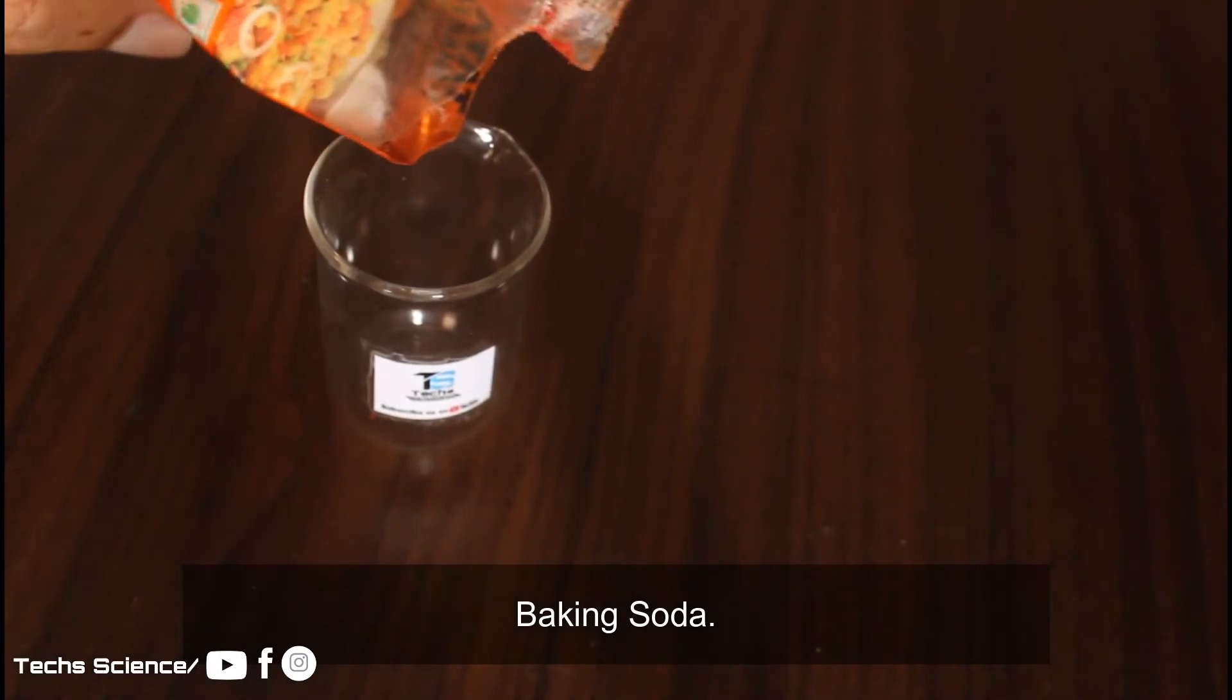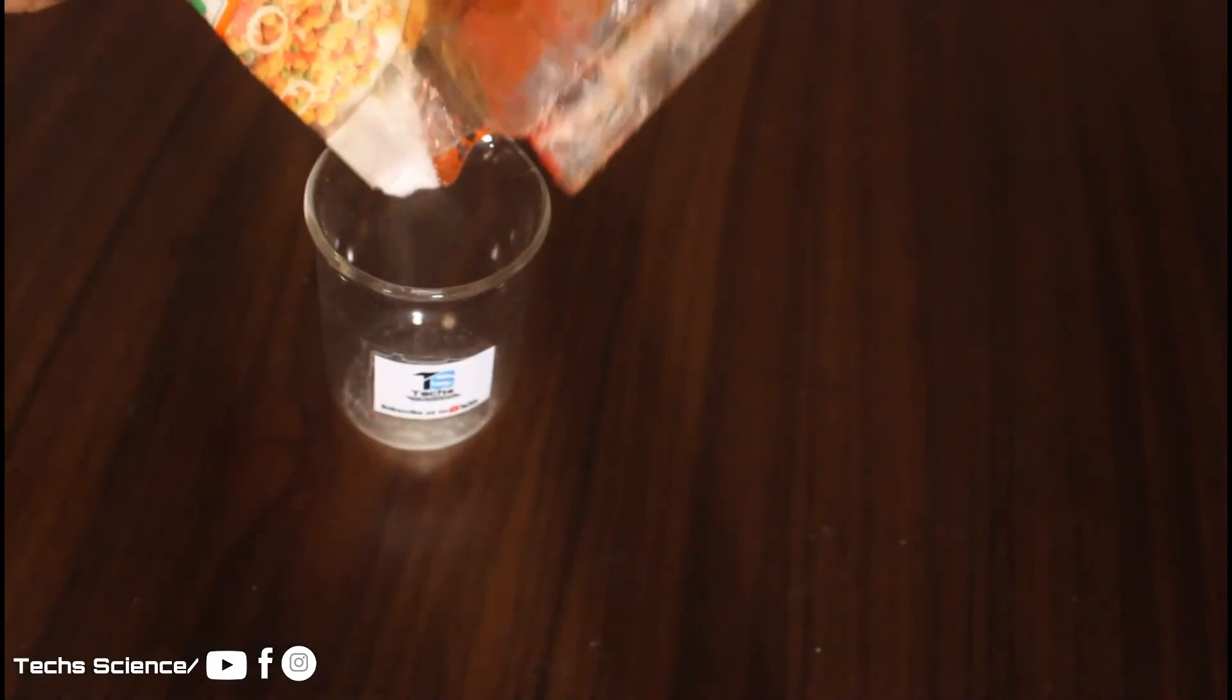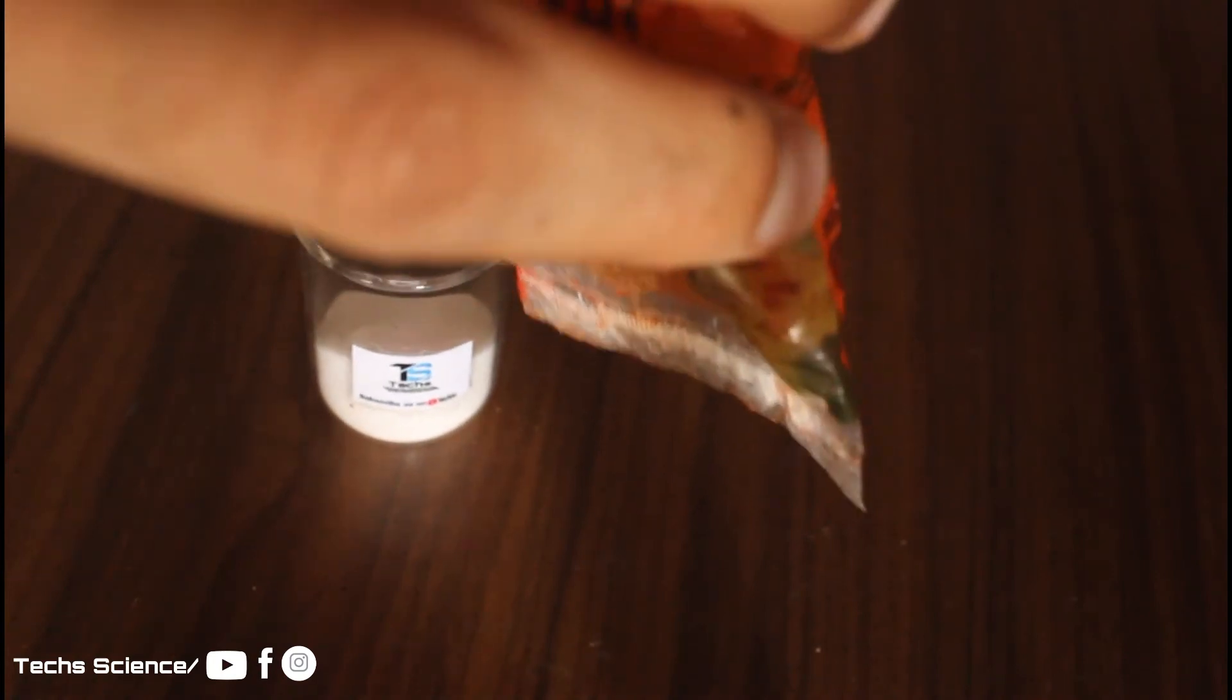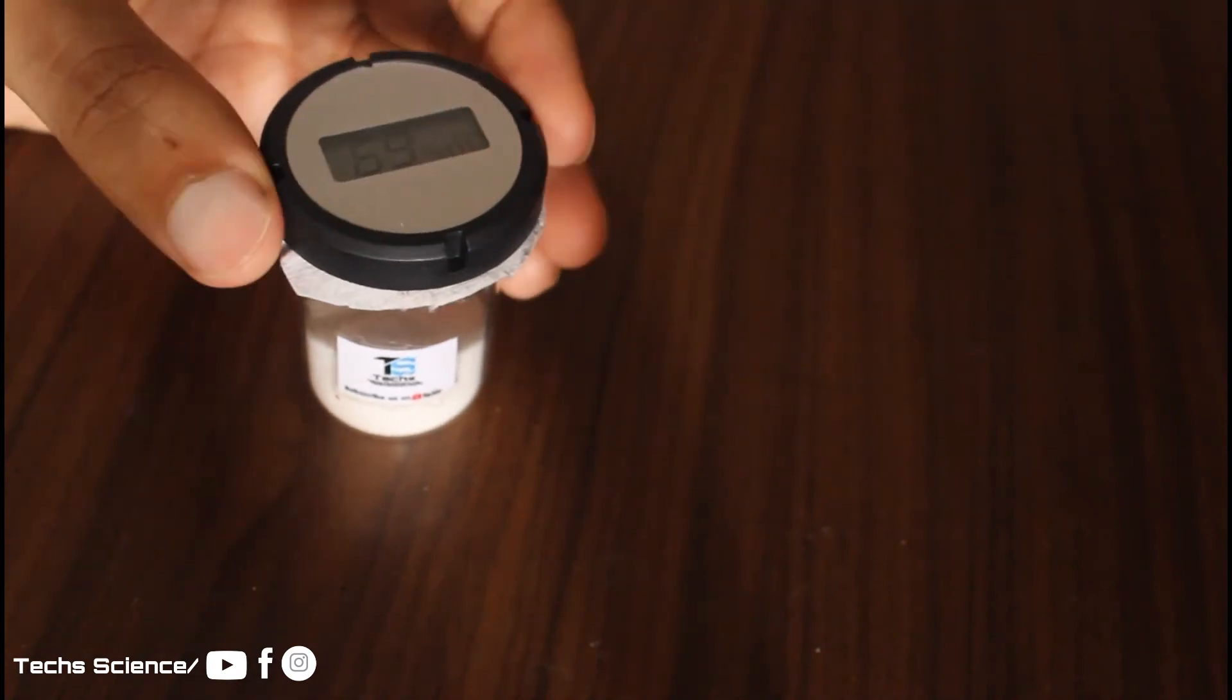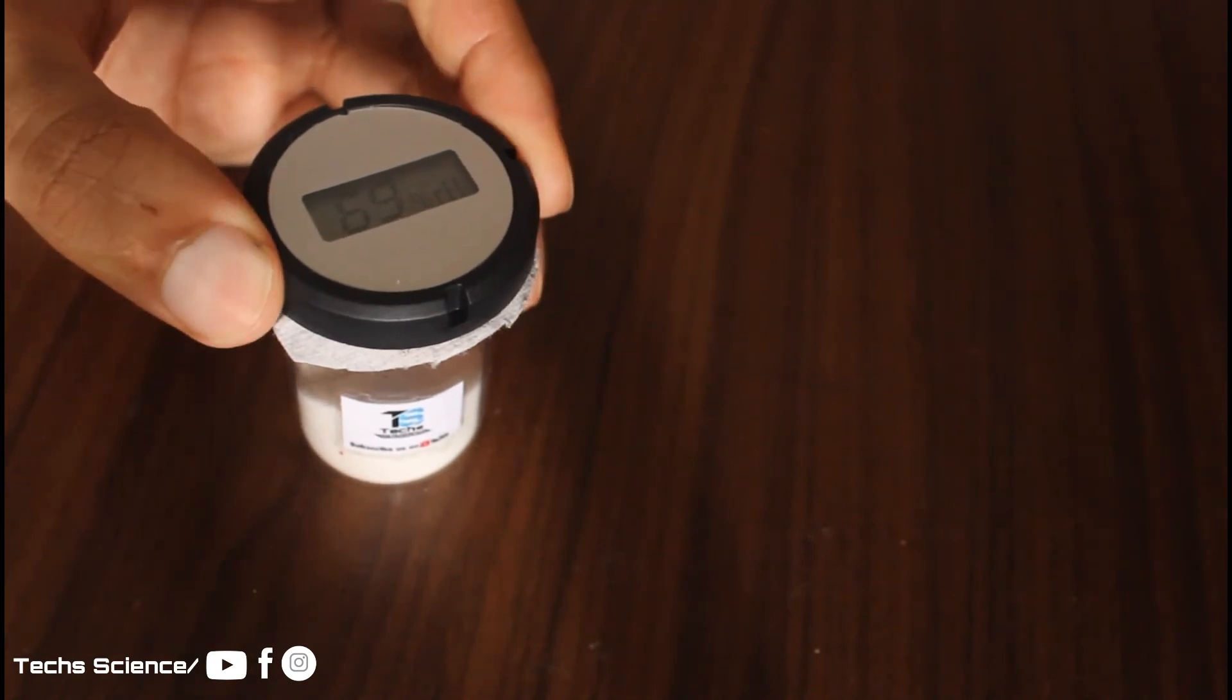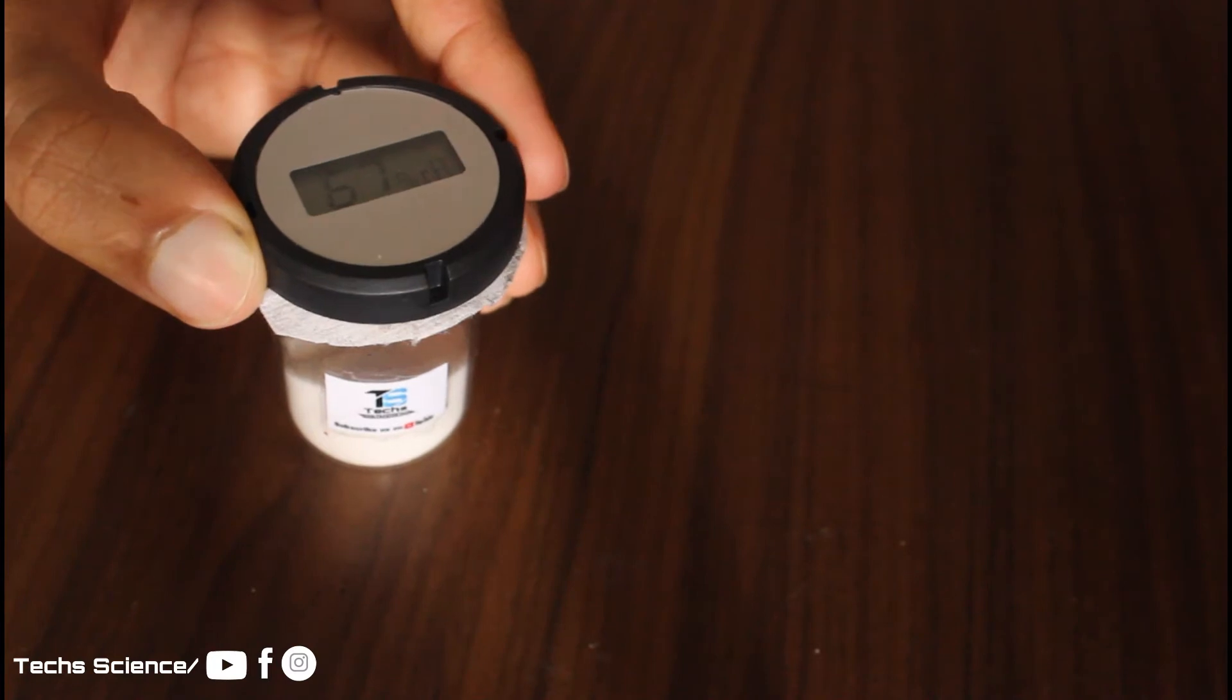Next is baking soda. It is also among the best moisture absorbers. Here we found 2% decrement in humidity with the baking soda.